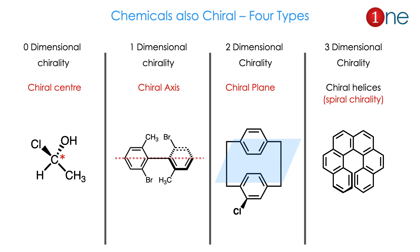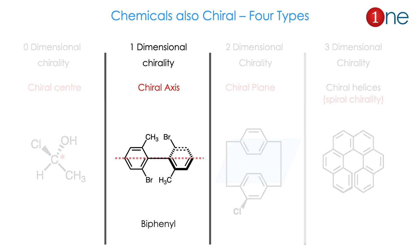The zero dimension is the chiral center — a carbon attached with four different groups, which everybody knows. Then, chiral axis, which is two perpendicular planes creating the chiral axis — that is our interest today. Then, chiral plane, where a particular plane creates the chirality. Finally, the spiraling of a compound creates chirality, mostly helices and DNA. Today, our whole interest is about chiral axis, mostly the biphenyl compound, and how we can find R and S configuration.